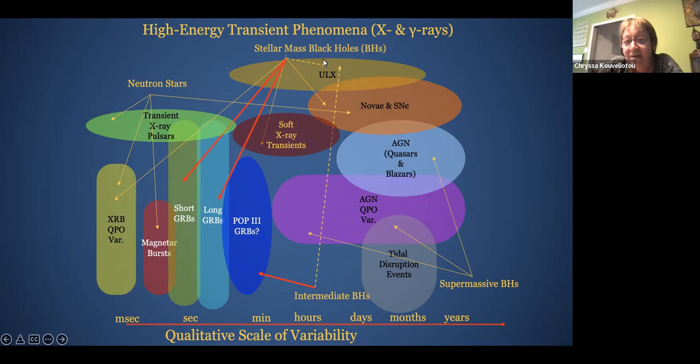If you look at this, can you see my cursor, my pointer? Yes. Okay, so this line actually indicates a qualitative scale of variability, starting from milliseconds going up to years, and also different sources that are the origin, the central engines of this variability. So there are stellar mass black holes here, associated with different transient phenomena, like gamma-ray bursts, long and short gamma-ray bursts, and then there are neutron stars, and then there are intermediate mass black holes and supermassive black holes.